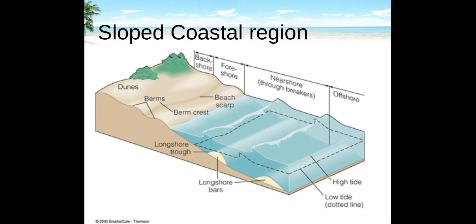Longshore bar and trough beaches consist of a short parallel bar separated from the beach by a deep trough. Breakers are typically 1.5 to 2 meters high and rip currents are moderate. The beach is usually straight and composed of medium sand. Cusps are often present on the beach, and the deep trough and distance to the outer bar generally restrict most bathers to the swash and inner trough.